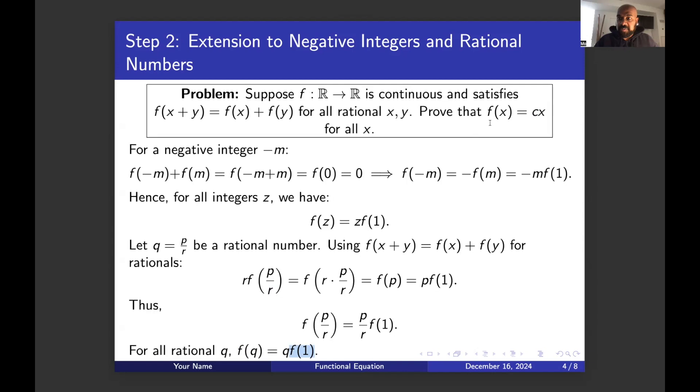f of q happens to be q times f of one for any q. And f of one is actually a constant. This is some function that we don't know and when we plug in one we get an actual number. The problem is we want to actually prove this regardless of what x we selected in the real numbers, right? And here we've only proven it for rational numbers. So really the thing that we haven't used about this function is the continuity and that's what's left to get the rest of the argument.